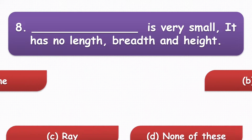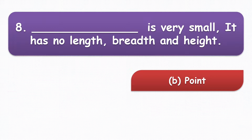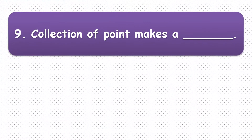Next question: blank is very small — it has no length, breadth, or height. The options are line, point, ray, and none of these. The answer is point.